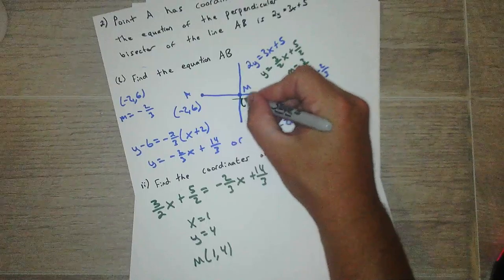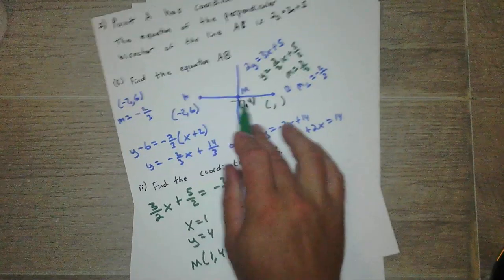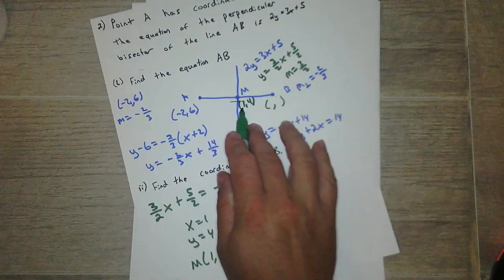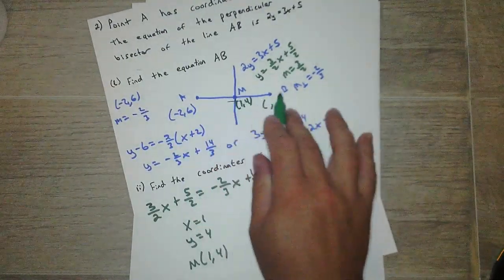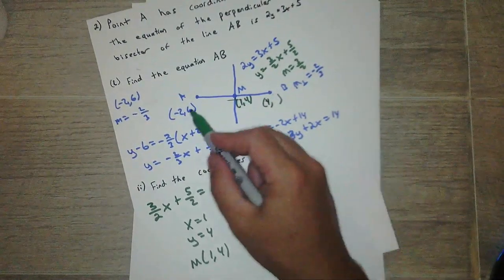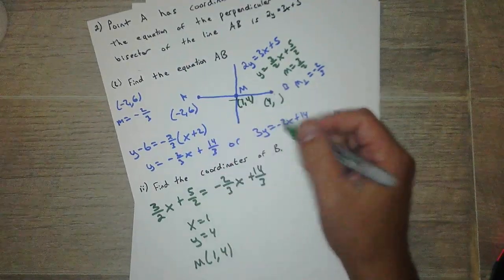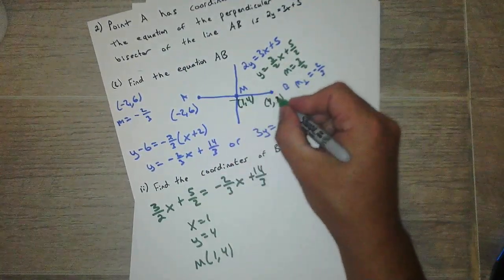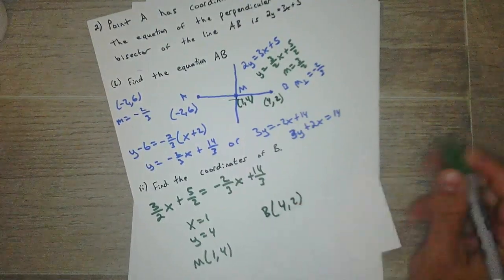So if the midpoint is (1, 4), A is (-2, 6). So look at the x values. To get from -2 to 1, all I did was add 3. Because that's the midpoint, I can do it again to get to B. So what's 3 + 1? 4. And for the y value, to go from 6 to 4, I subtract 2. So then I subtract 2 from this one to get B. So B then is (4, 2).